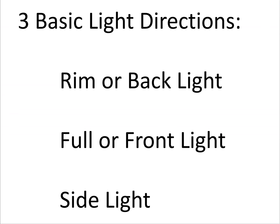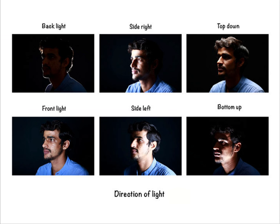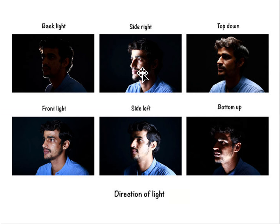So we're going to start with rim or backlight, go on to full or front light, and then on to sidelight. Here's a diagram showing backlighting where the light is behind the subject, frontlighting where the light is behind the shooter toward the subject, and a variety of sidelights — top, bottom, sidelight — all essentially the same kind of light raking across the subject from different directions.